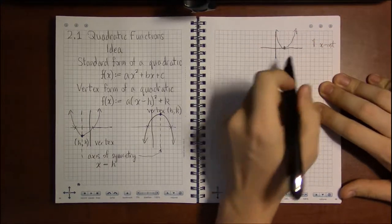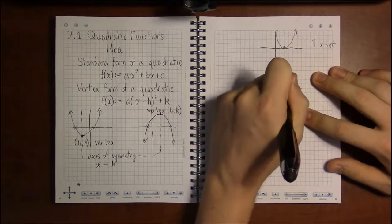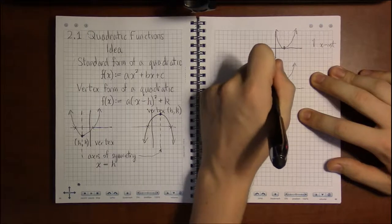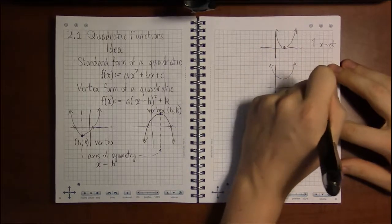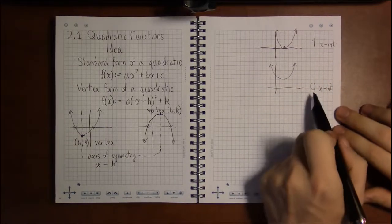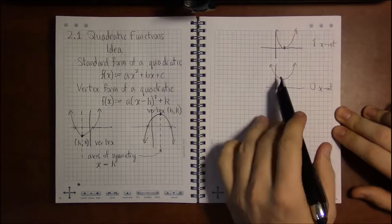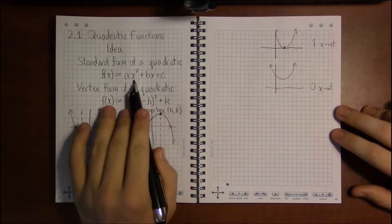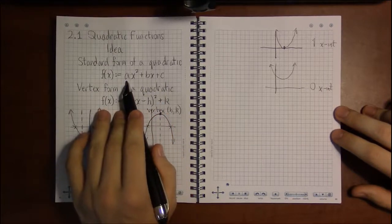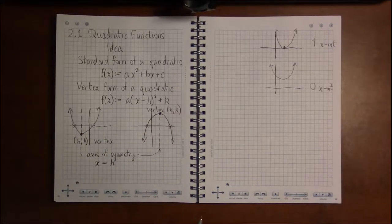Graph that never touches the x-axis. In this case, we don't have any x-intercepts, we don't have any real roots of the quadratic. In other words, there's no real number which makes this expression zero, but there will be two complex numbers which make it zero.